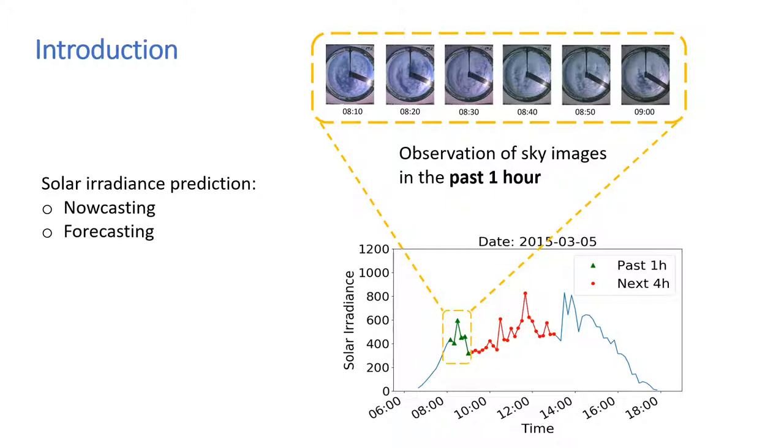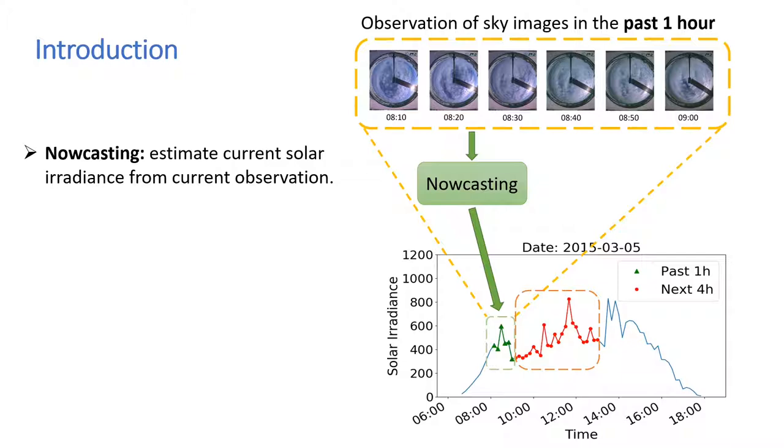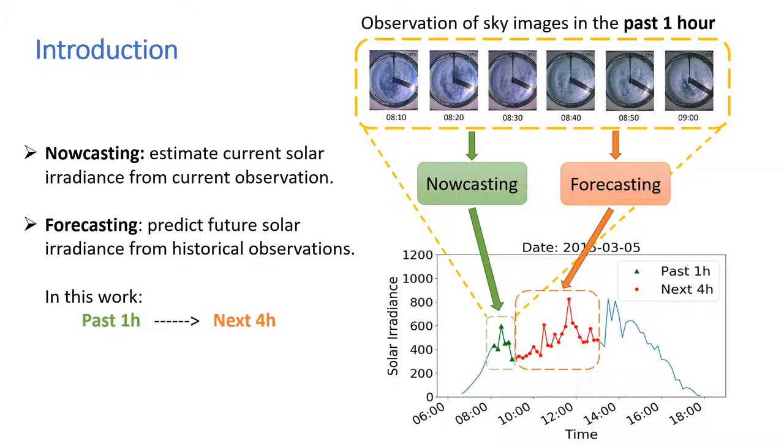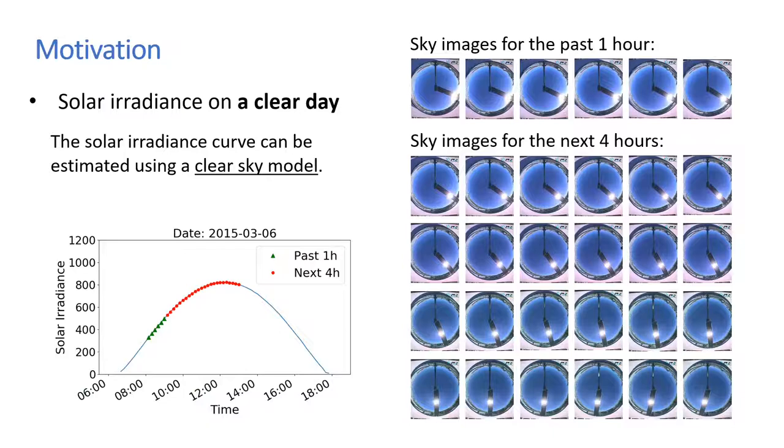In our work, the prediction contains two parts: nowcasting and forecasting. Given the observation of sky images in the past one hour, the nowcasting network estimates the solar irradiance corresponding to the capture time of sky images, while the forecasting network predicts the solar irradiance for the next four hours.